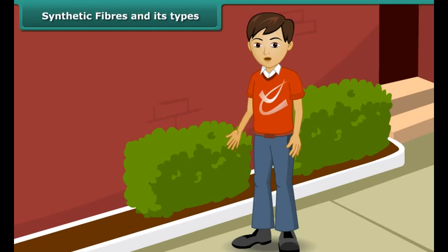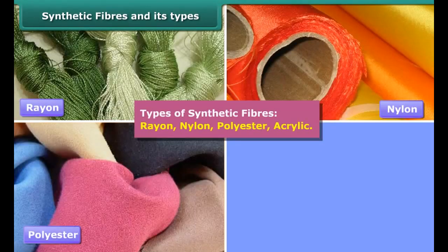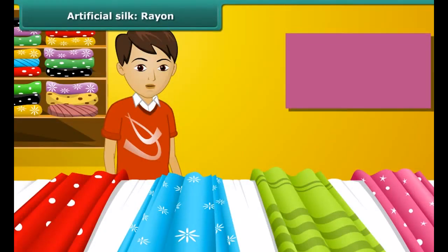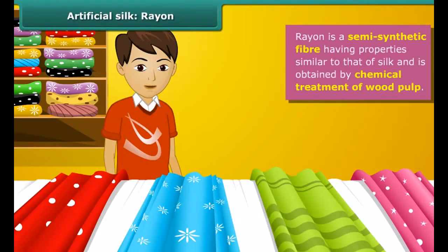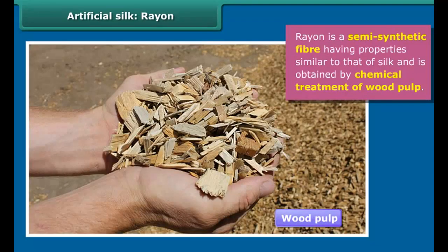Depending upon the types of chemicals used for manufacturing synthetic fibers, they are classified as rayon. Do you know that rayon is a semi-synthetic fiber having properties similar to that of silk? It is a man-made fiber obtained by chemical processing of wood pulp, which is a natural resource — that is why it is called a semi-synthetic fiber.